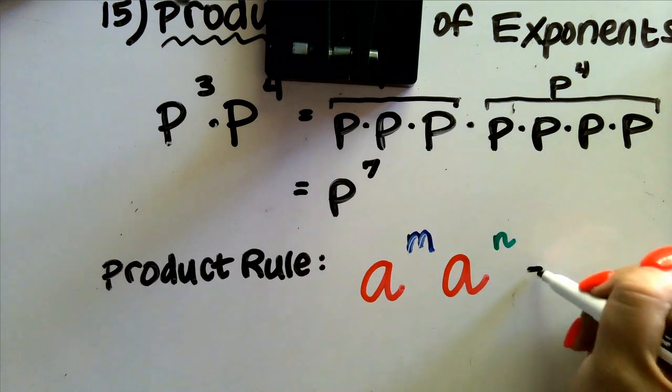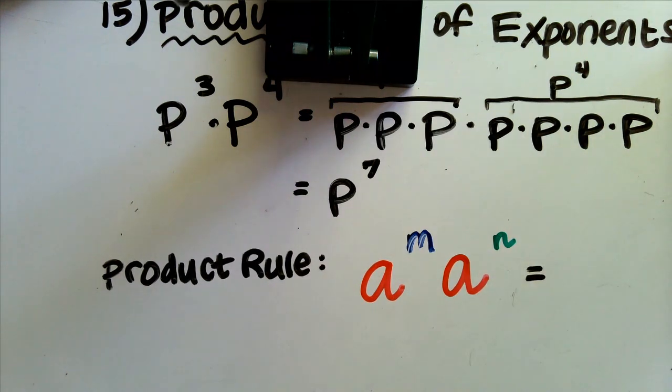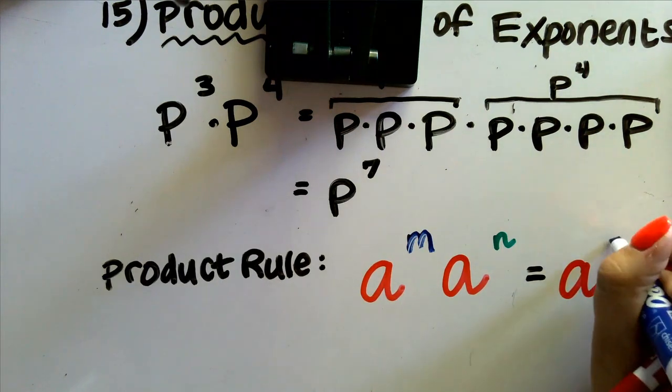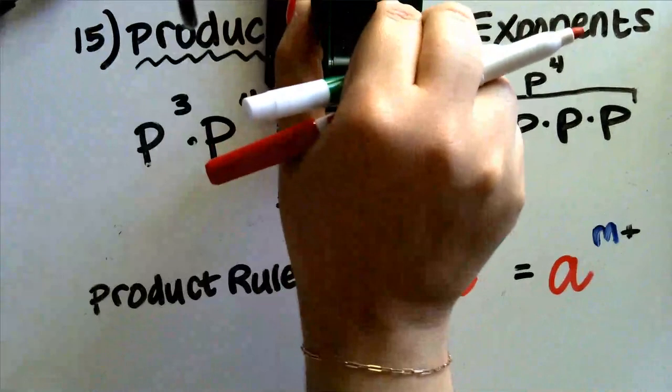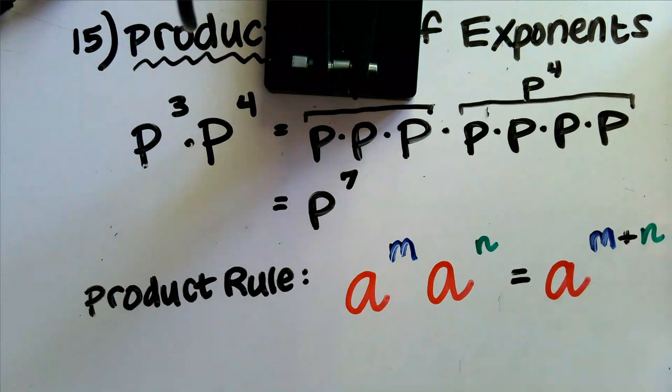We can say that we can simplify it actually down to a to the m plus n power. That right there is our product rule.